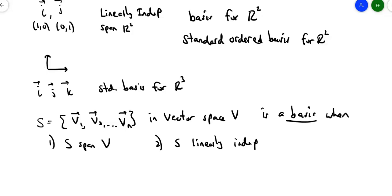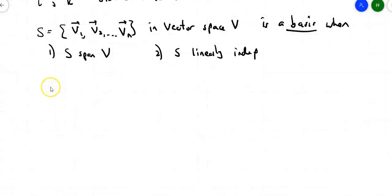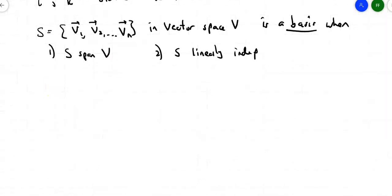So we talked a little bit about standard bases — I and J are the standard basis for R2; I, J, K are the standard basis for R3. You can also have non-standard bases, which we'll work on as we go through here. The standard bases are easy to see. You can have standard bases for things besides vectors in Rn — you can have standard bases for matrices and such.